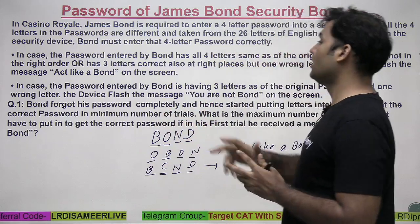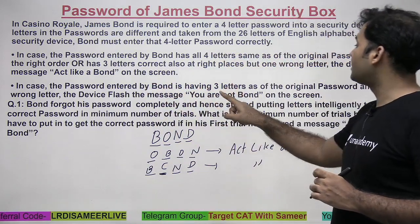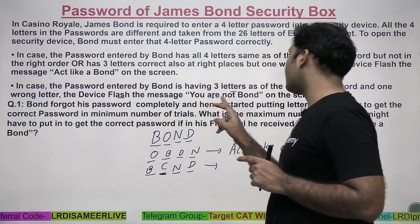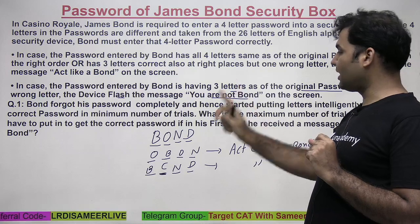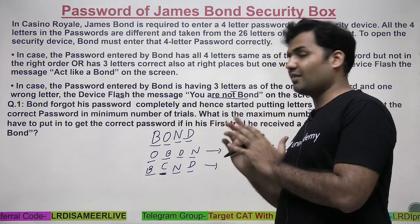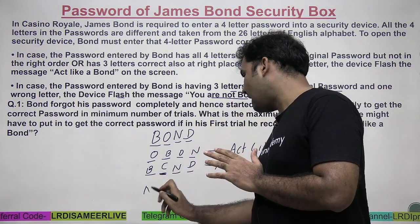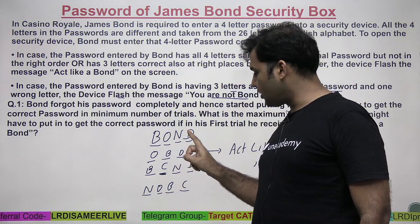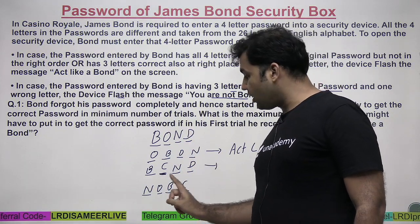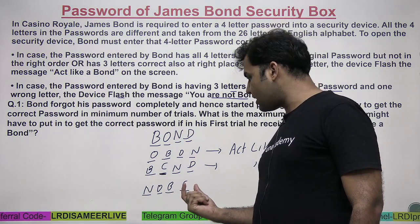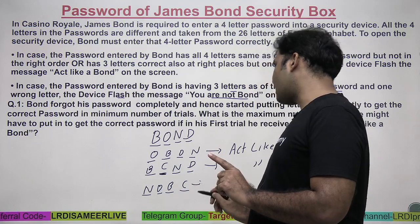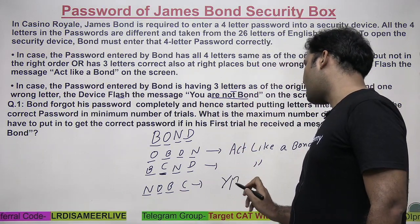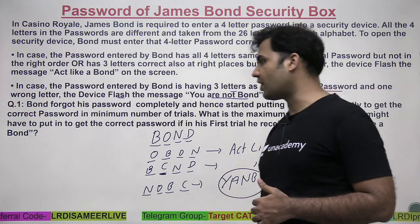In case the password entered by Bond has three letters from the original password and one wrong letter, the device flashes the message 'you are not born.' That means Bond is using three letters out of B, O, N, D but their order is not the same and one letter is wrong. For example, if he enters N-B-D and uses C as the fourth letter — three letters match the password but are out of order, and one letter is wrong — the device flashes 'you are not born.'